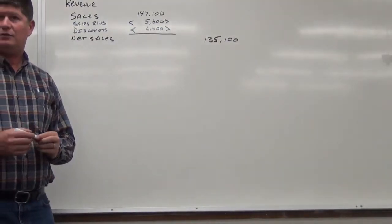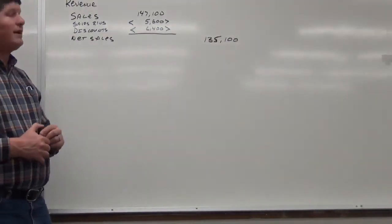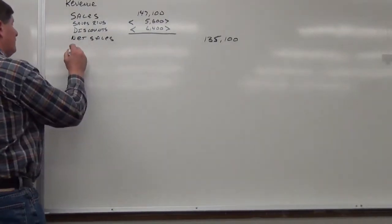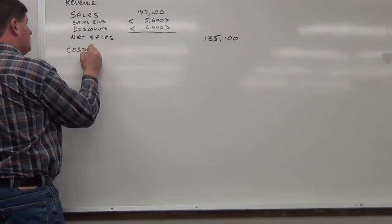Net sales. Okay. Do we have any other contra accounts that go with this? No. No? Okay. So, what do I get from this? Sales less returns less discounts. Net sales. Net sales. Can someone spot me on the math here? $135,100. Okay. So, I'm going to come out here $135,100. Good.